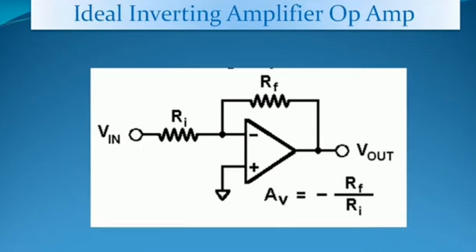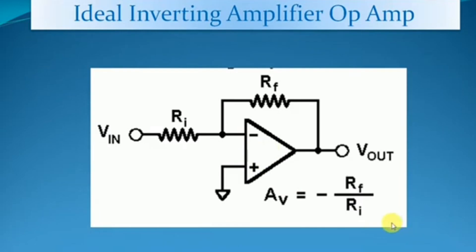In brief, we have already derived the inverting amplifier closed-loop gain using op-amp in the ideal case as minus Rf by Ri, where Rf is the feedback resistance and Ri is the input resistance connected to the inverting terminal of the op-amp. Now we are going to see, for the same circuit, how to derive the closed-loop gain of the inverting amplifier using op-amp in the practical case.